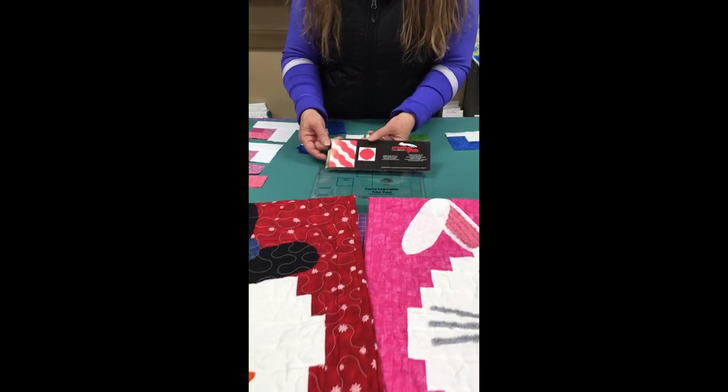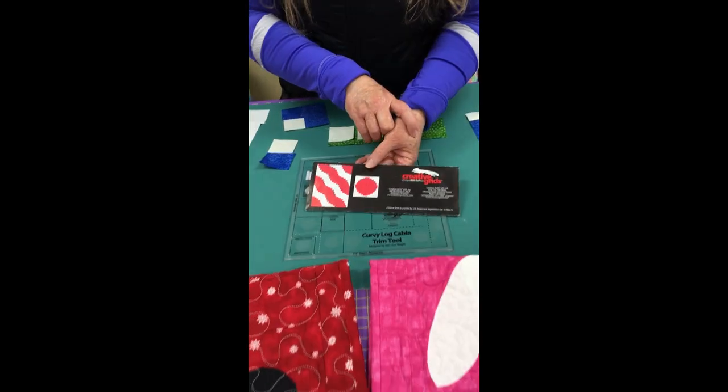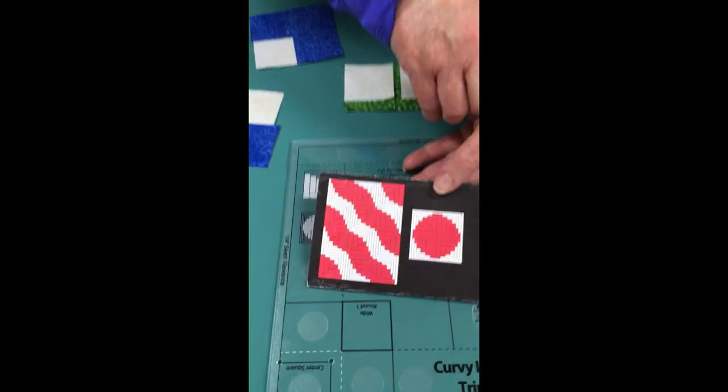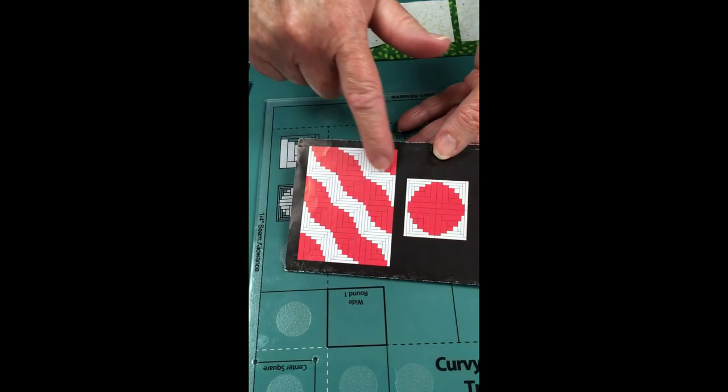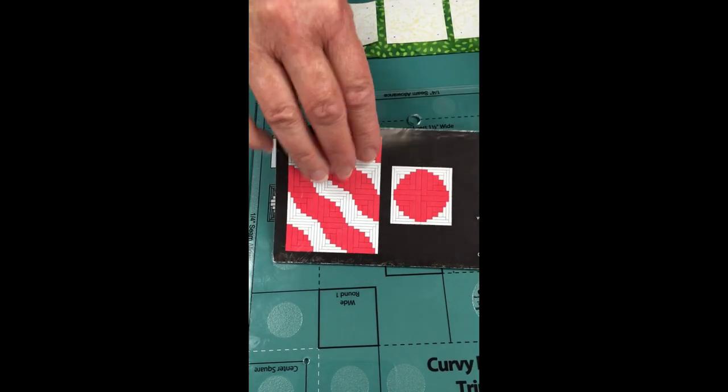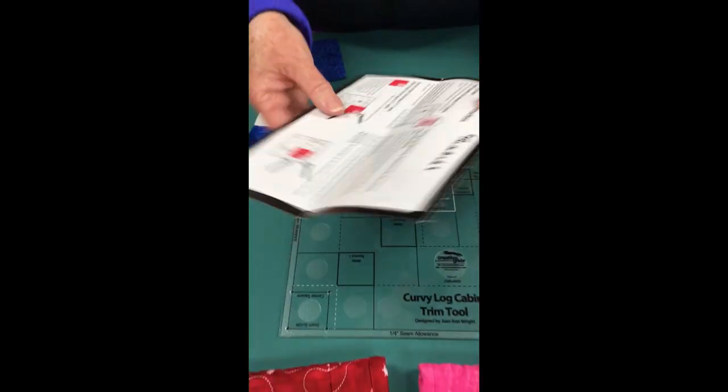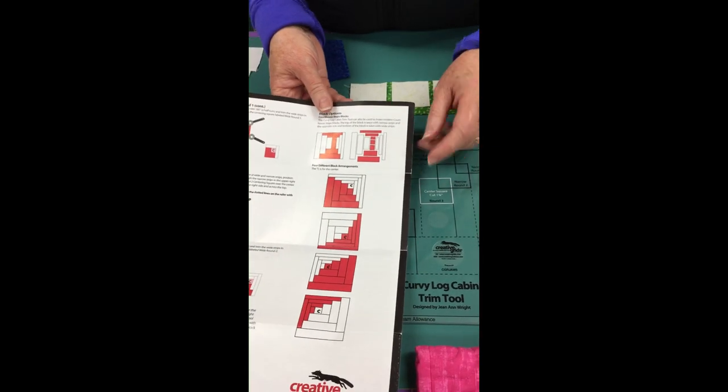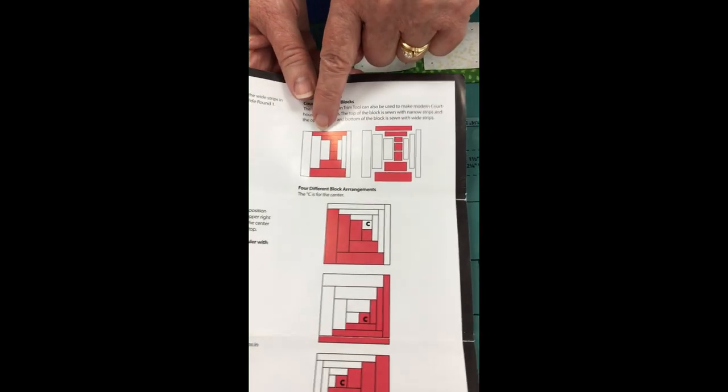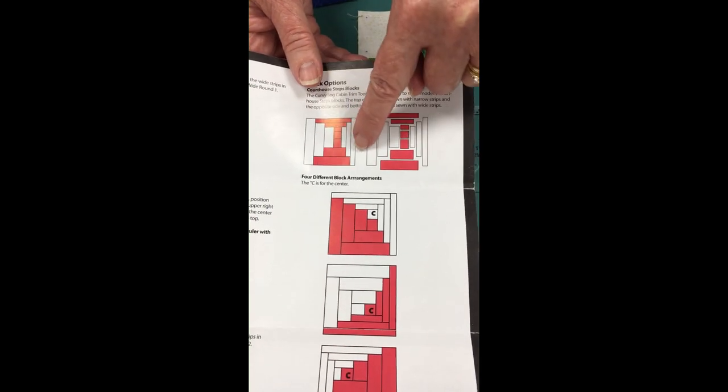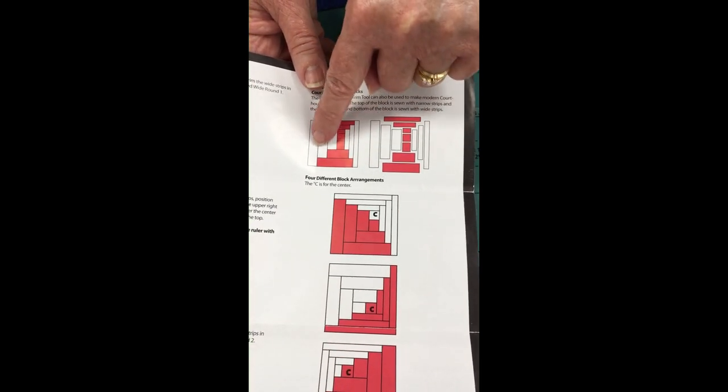Here are a couple more images of quilts made with the ruler. You can get that fun serpentine effect. These are block images from inside the instructions, including a fun courthouse steps block. There's the skinny side and the wide side.